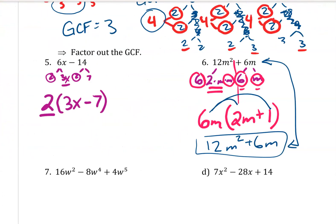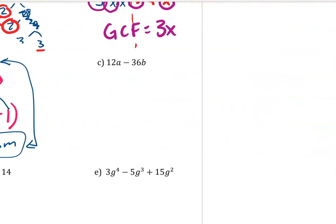Go ahead and try problem c on your own. Hopefully you saw we can take a 12 out, but no letters — I have an a on one and a b on the other. So it's 12 times a minus 12 times 3b, giving 12 times (a minus 3b).